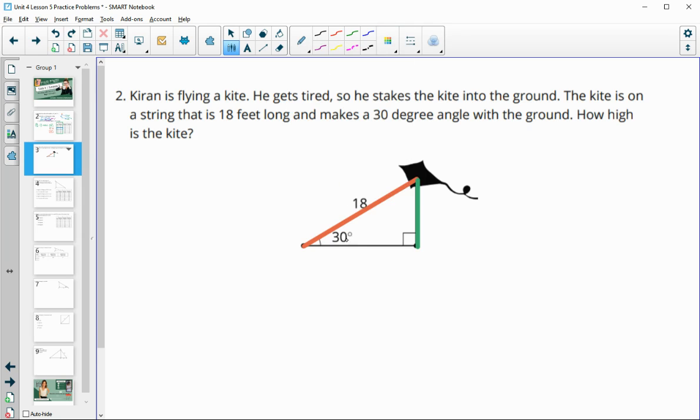Now we know that it's a 30-60-90. Since it's got a 90-degree angle with that 30, we know this one is 60. Remember that the short leg or the one across from the 30-degree angle is half the hypotenuse. So this height right here is going to be equal to 18 divided by 2, so the height of the kite is 9 feet.